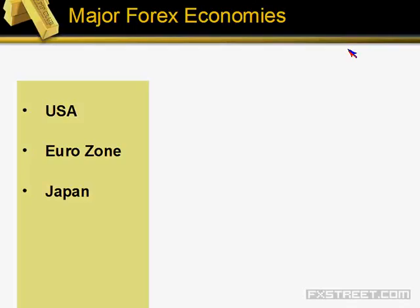We're going to start with currencies equating to economies, and we're going to talk a little bit about the players. First, of course, is the USA, which has the US dollar — that's the prime world currency. It is the measure. Every other currency in the world is basically evaluated in terms of what its value is against the US dollar.